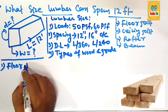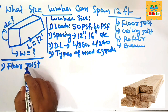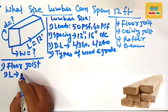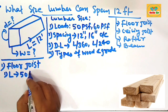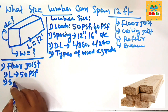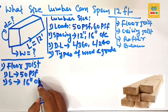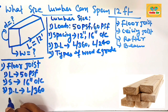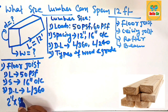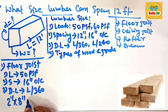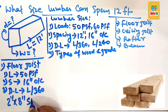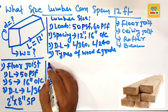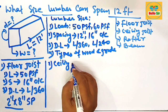For floor joist size required to span 12 feet: the floor carries the load of walls, ceiling, and roof, so it carries a heavy load of about 50 pounds per square foot. The spacing between the joists is 16 inches on center, and the deflection limit is L/360. You should use a 2-inch by 8-inch dimensional lumber of southern pine species for a 12-foot floor joist span.